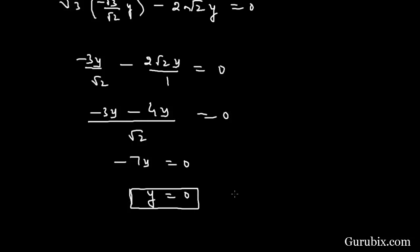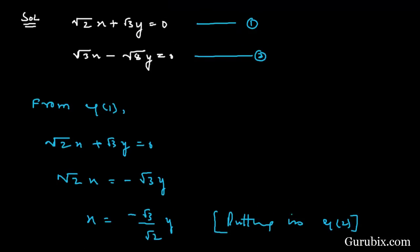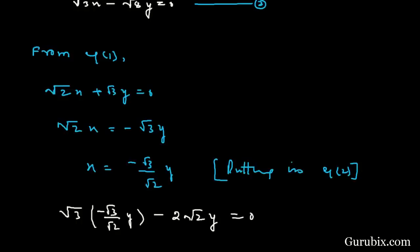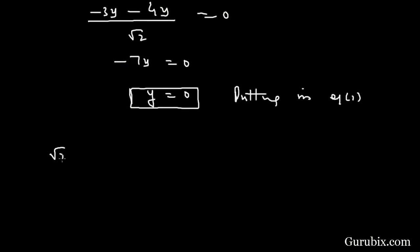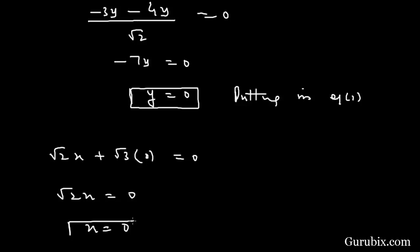Now we substitute y equals 0 back into equation number one to get the value of x. Equation one gives: root 2·x plus root 3 times 0 equals 0, so root 2·x equals 0, which means x equals 0. Therefore, the solution is x equals 0 and y equals 0. Thank you.